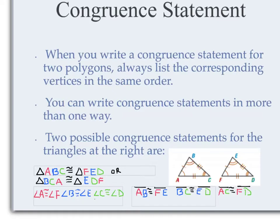For the segments, look at the tick marks. Segment AB — one tick mark — is congruent to segment FE — one tick mark. Segment BC — three tick marks — is congruent to segment ED — three tick marks. Last side: segment AC — two tick marks — is congruent to segment FD — two tick marks.